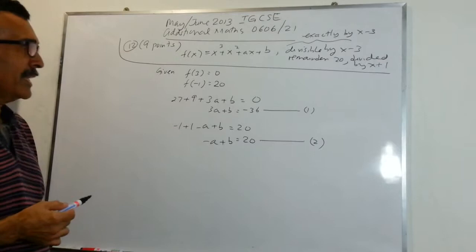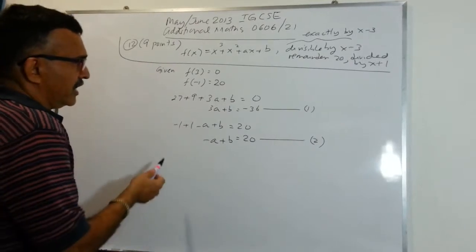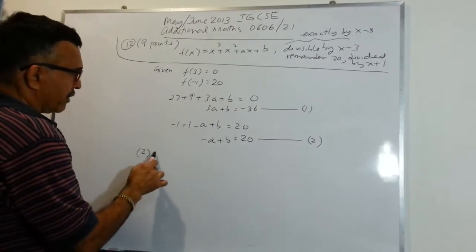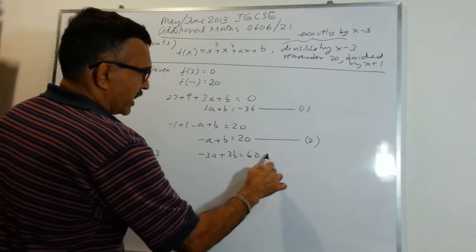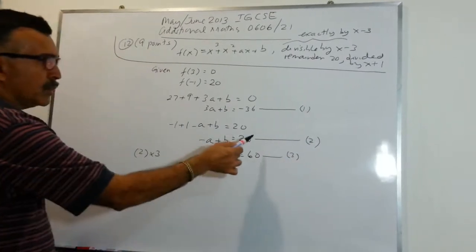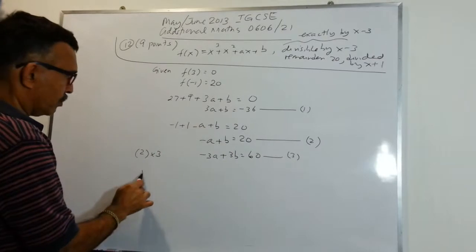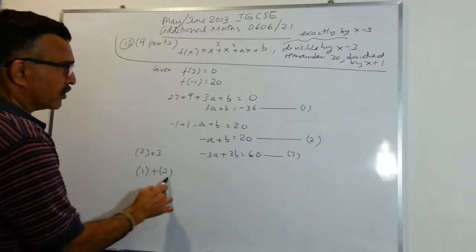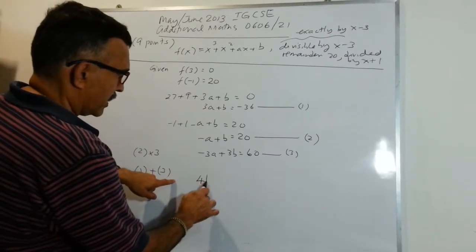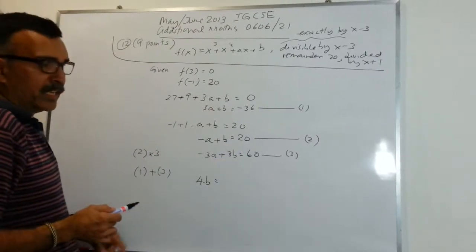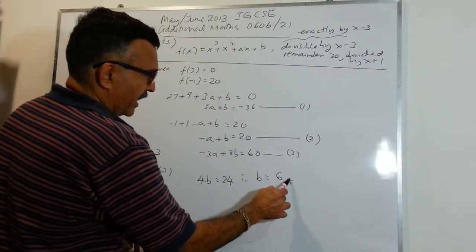Now let's solve simultaneously. Take equation 2 and multiply by 3 to get −3a + 3b = 60; call this equation 3. Add equation 1 to equation 3: the 3a terms cancel, and b + 3b = 4b. Then −36 + 60 = 24, so 4b = 24, therefore b = 6, as required to show.